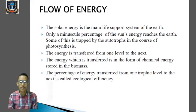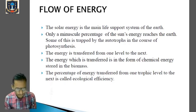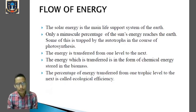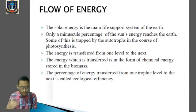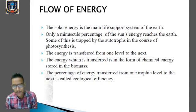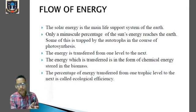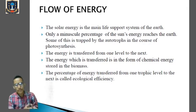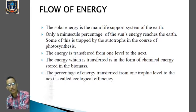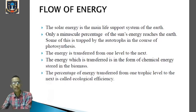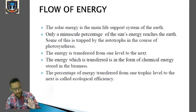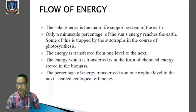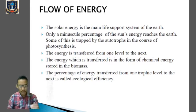Whenever the green plants perform the process of photosynthesis and manufacture glucose or food, the solar energy is converted into chemical energy and stored. That means the solar energy trapped by the producers, by the autotrophs, will be converted into chemical energy and stored. So whenever the primary consumer feeds on the producer, that chemical energy will move to the next level.